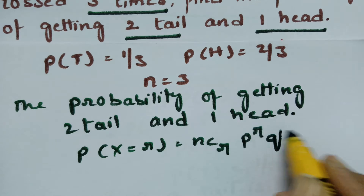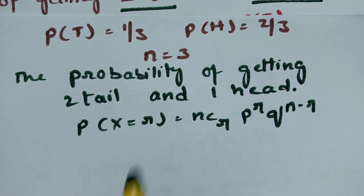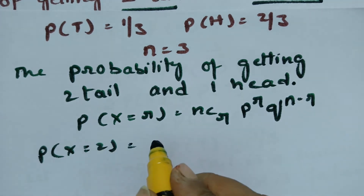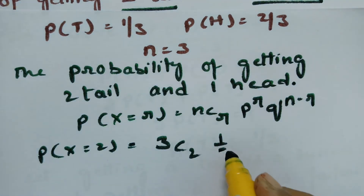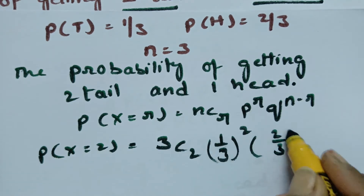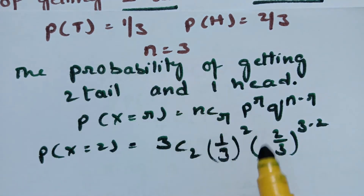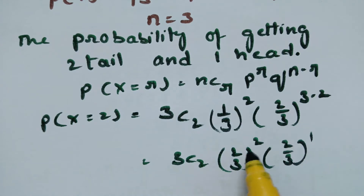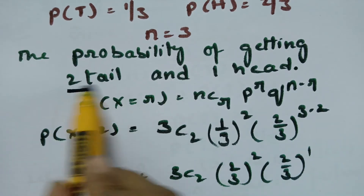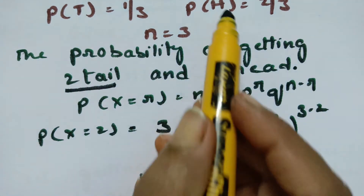So P(X = 2) = 3C2 · (1/3)² · (2/3)^(3−2). Here p = 1/3 is the probability of success (getting a tail), r = 2 for two tails, and q = 2/3 is the probability of getting a head for one time.